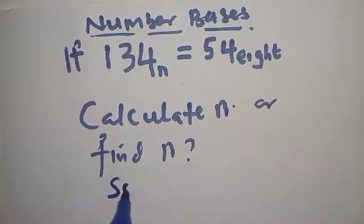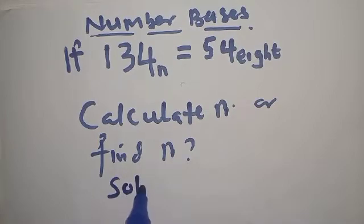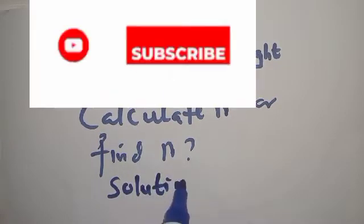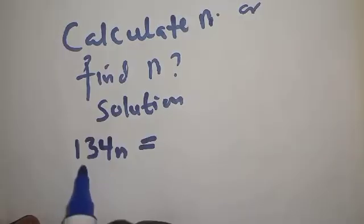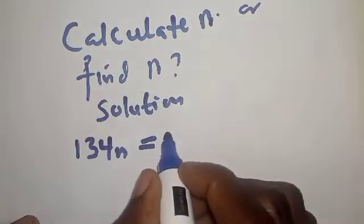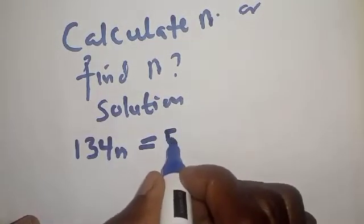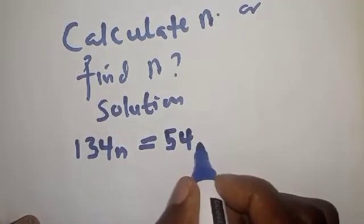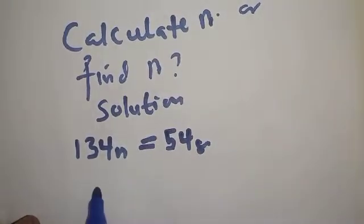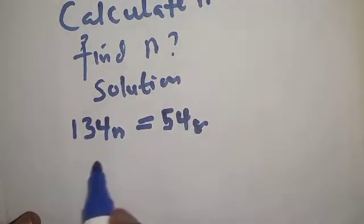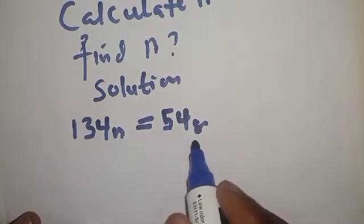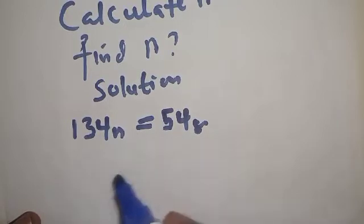Solution. 134 base n is equal to 54 with base 8. This can be rewritten. We have to convert the equation on the left-hand side and the right-hand side to base 10 first before we can solve for the final answer.